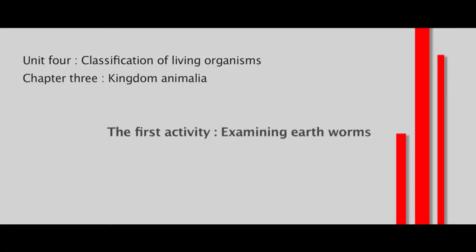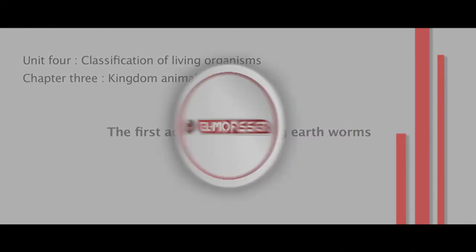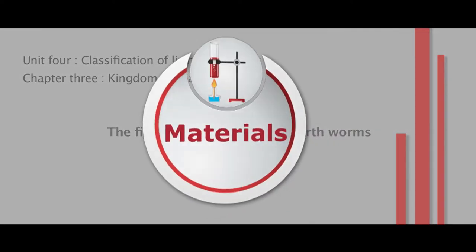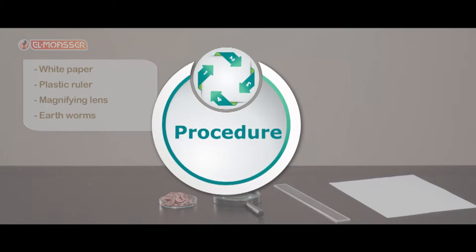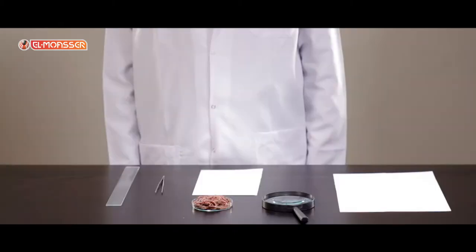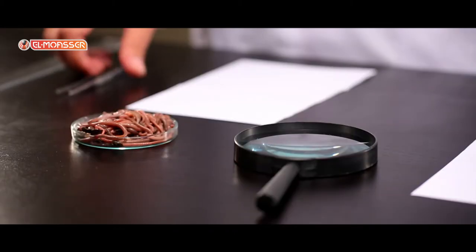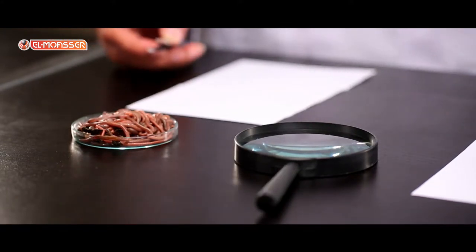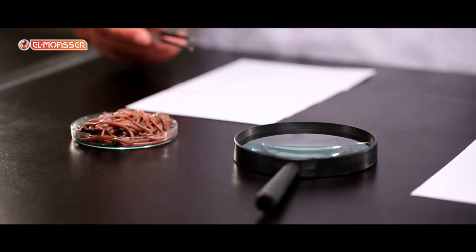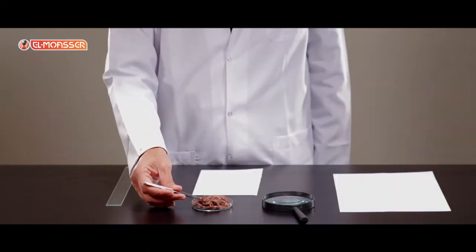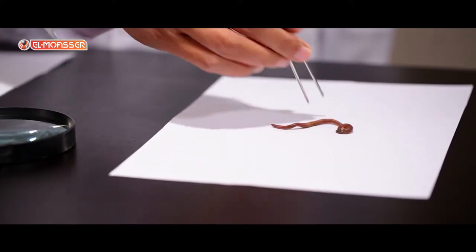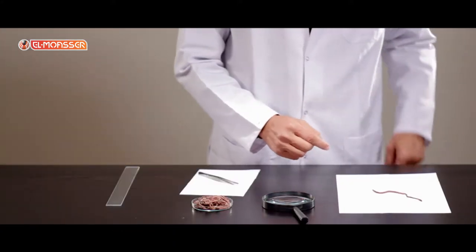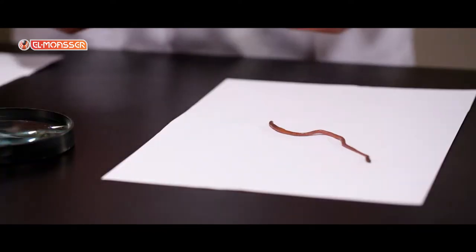The first activity: examining earthworms. The materials: white paper, plastic ruler, magnifying lens, earthworms. Procedure: We can find the earthworms in damp soil. Observe that the worms are alive and different in their length and size. Put one of these worms on a white paper by using the forceps.